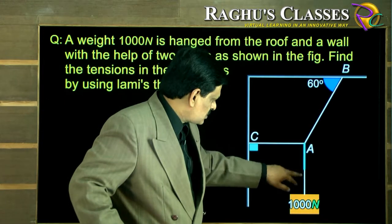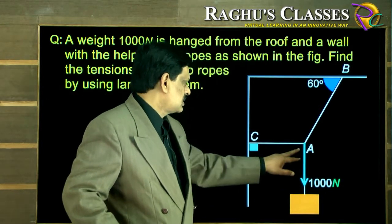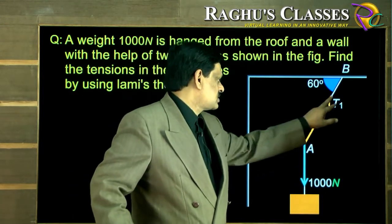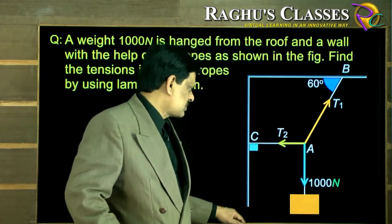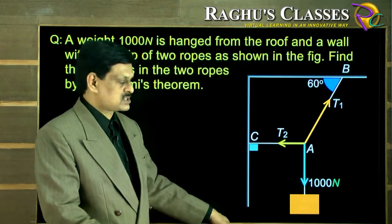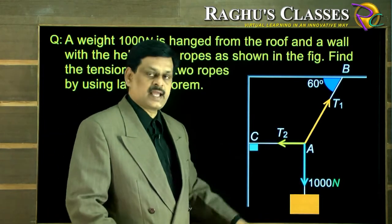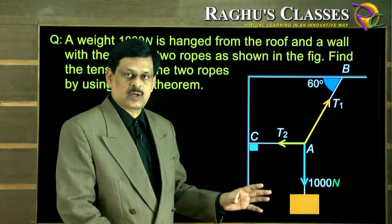So let us put the forces. The weight is acting down at 1000 Newtons. Let the tension in this one be T1 and the tension in this one be T2. These three forces are acting at A and keeping the point A in equilibrium.